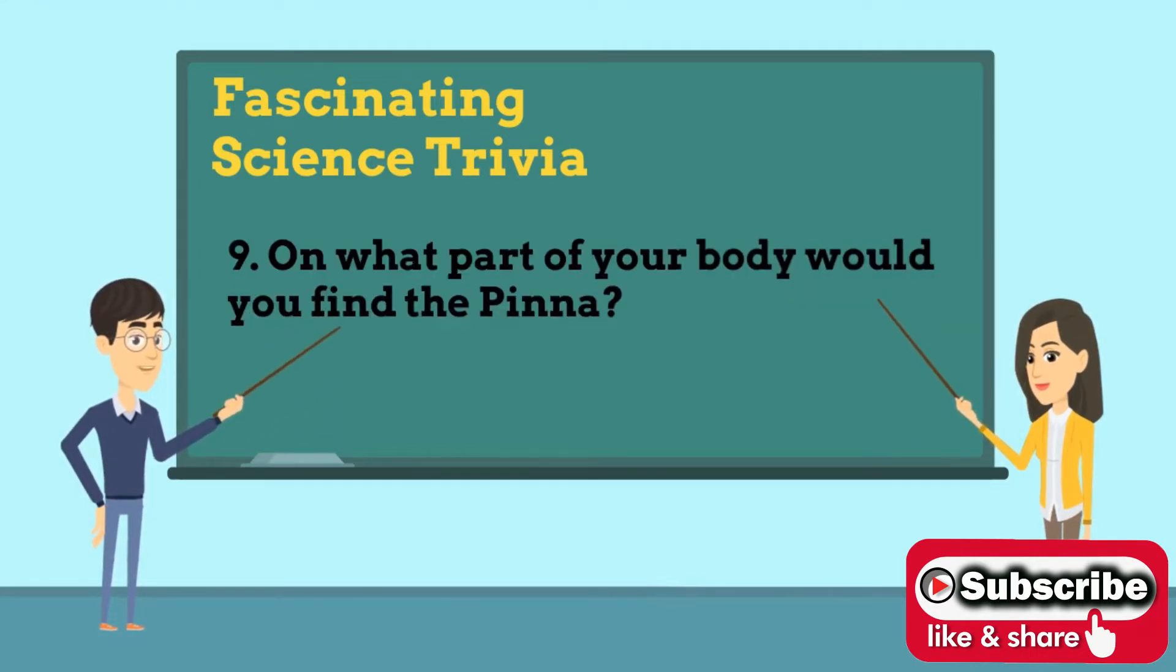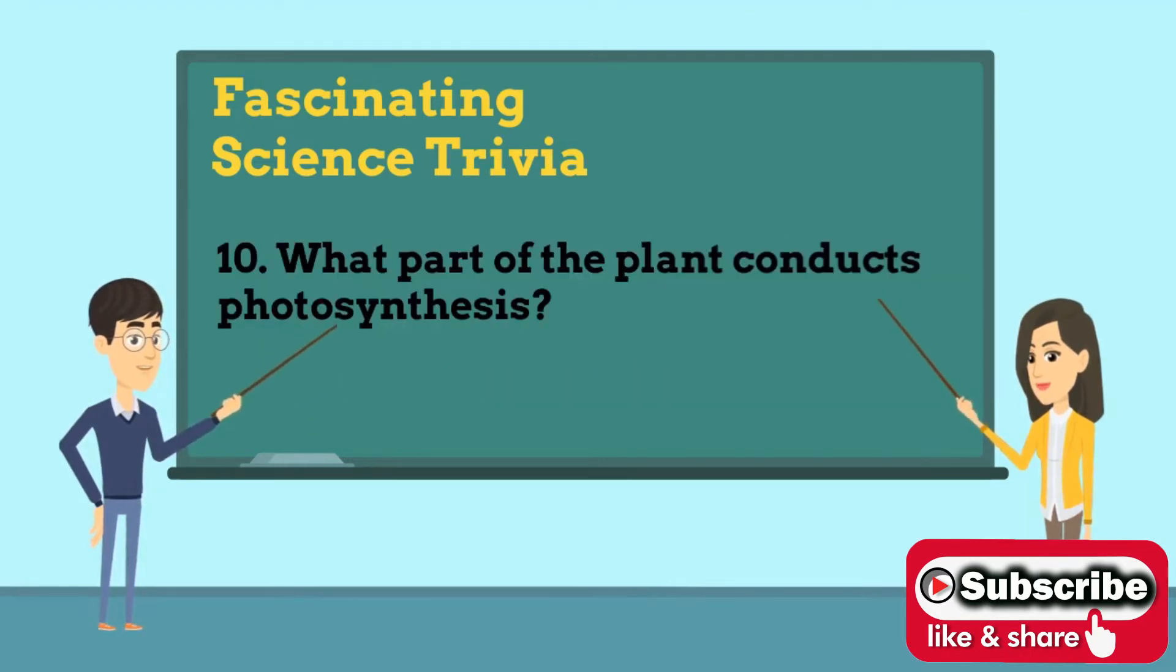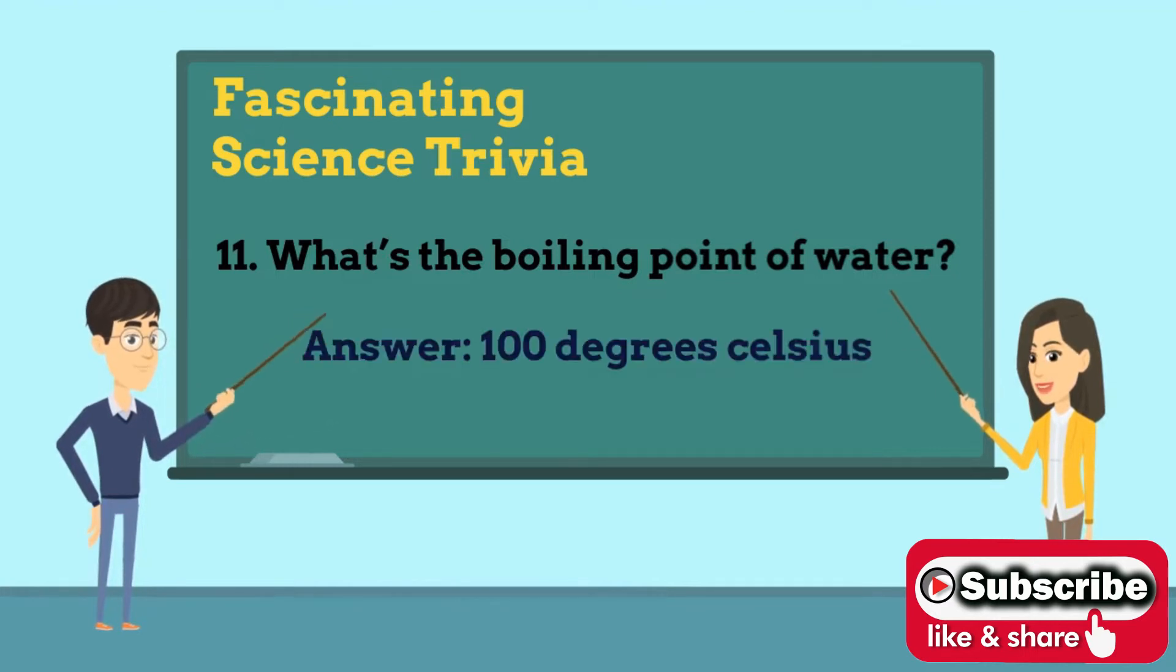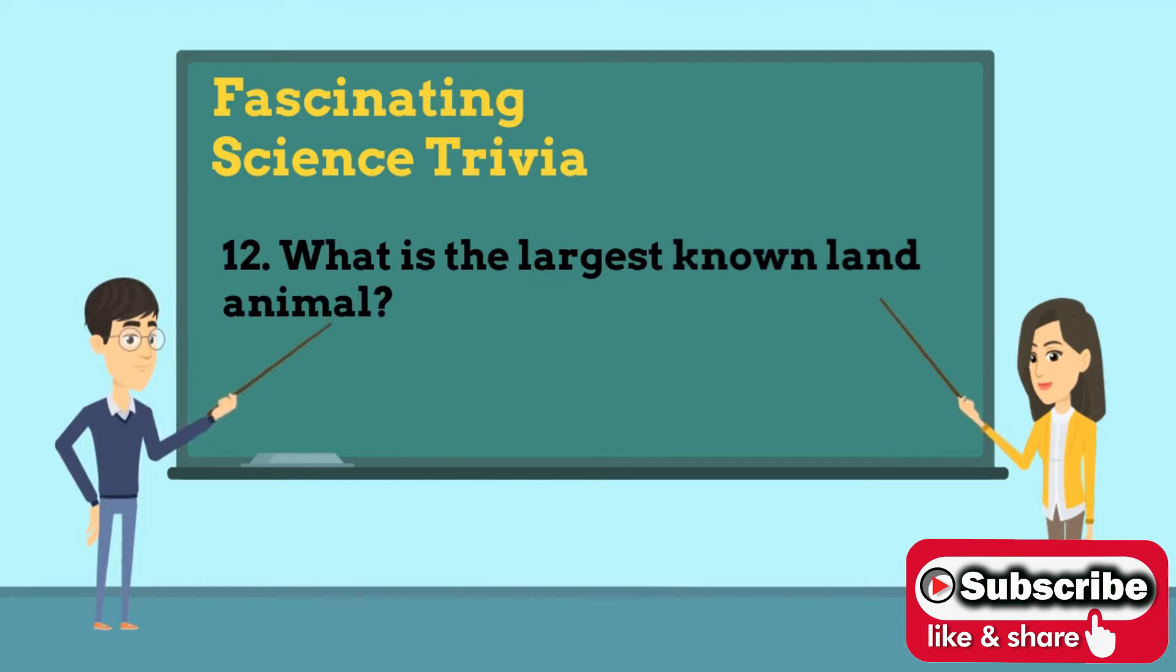body would you find the pinna? Answer is ear. Number 10: What part of the plant conducts photosynthesis? Answer is leaf. Number 11: What's the boiling point of water? Answer is 100 degrees Celsius. Number 12: What is the largest